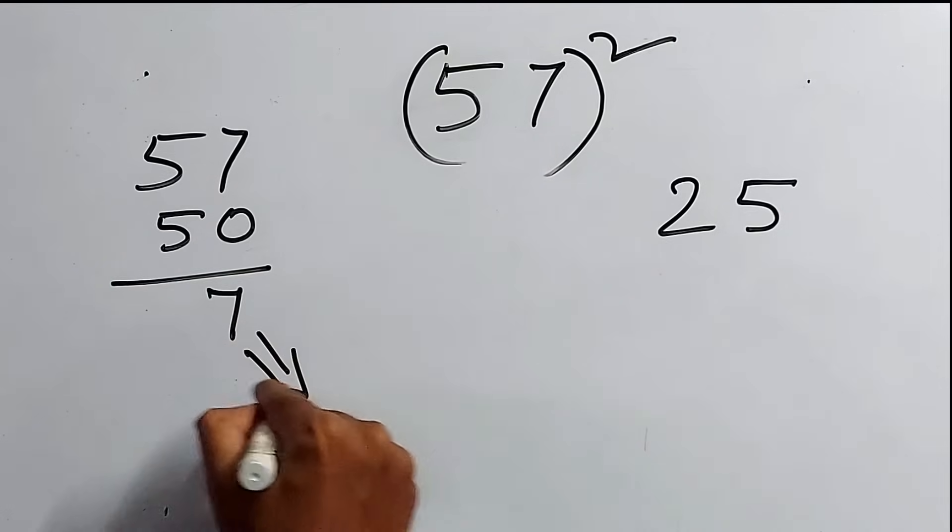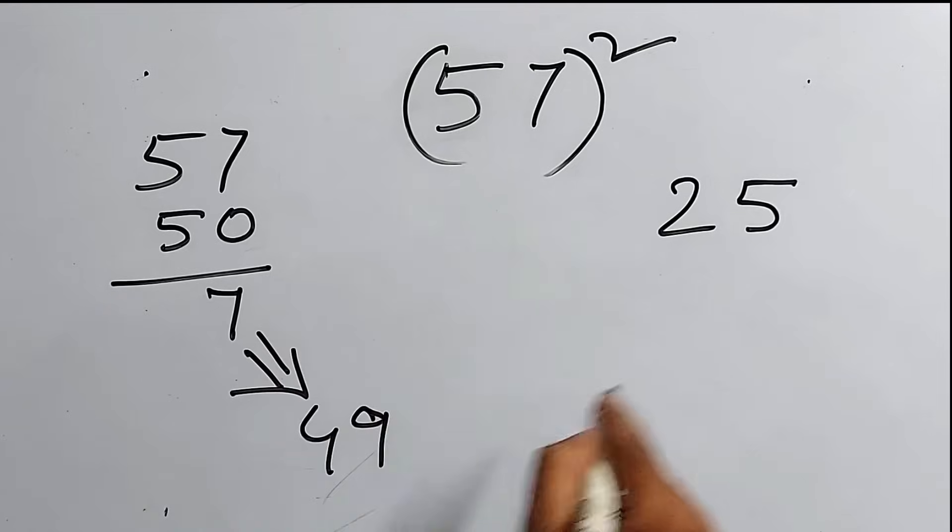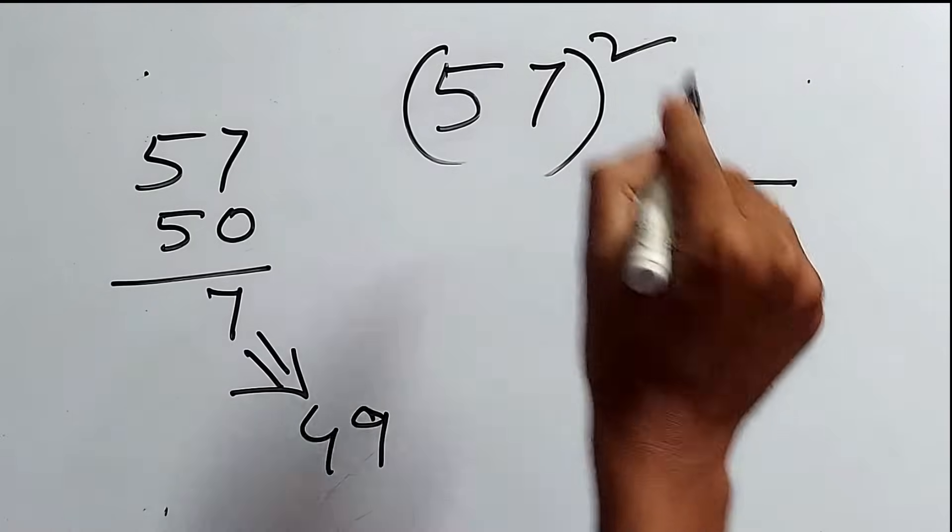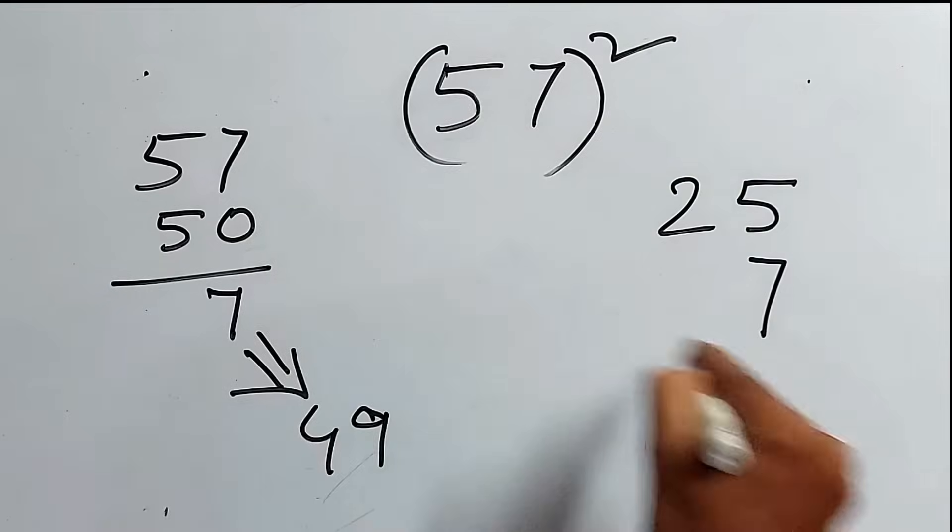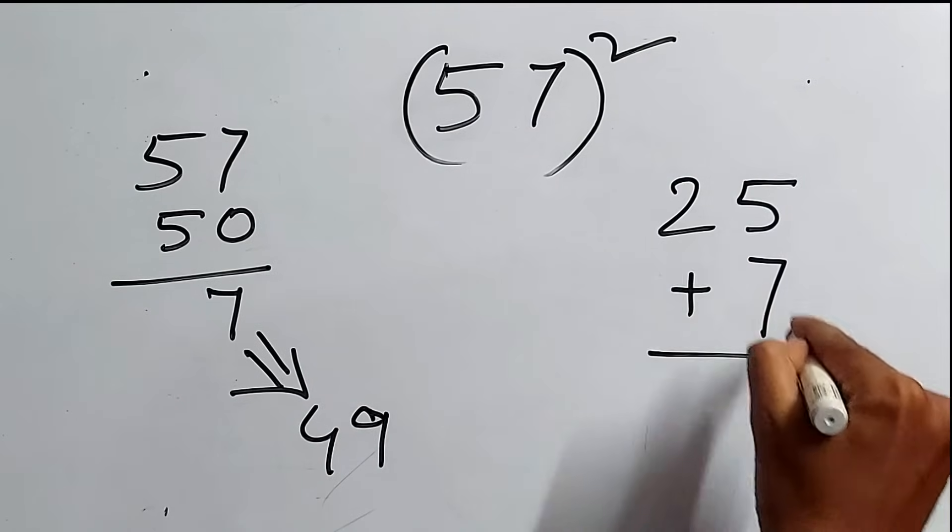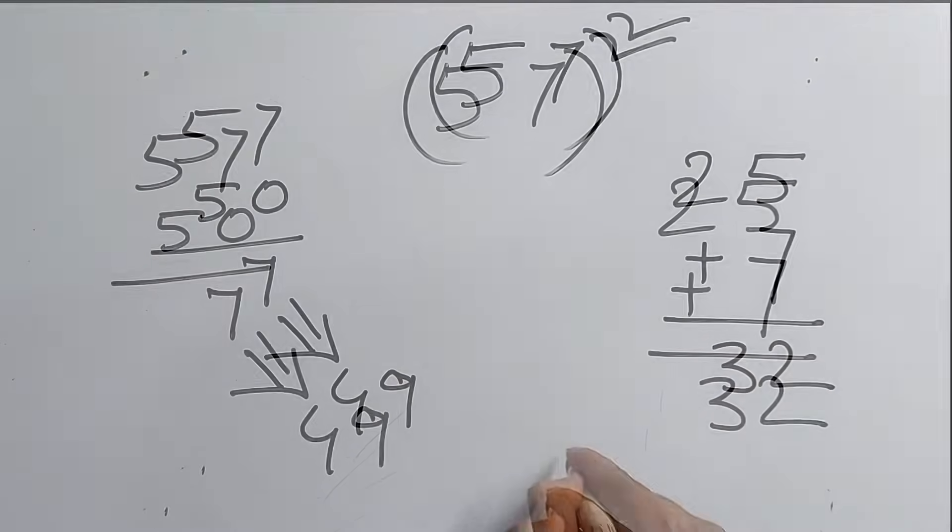Now, 7 7s are, we know, 49. Right? Step by step. And, here, we will add 7 because it is more than 50. So, this time, plus 7 plus 5, 32. So, 3, 2, 4, 9. This is your answer.